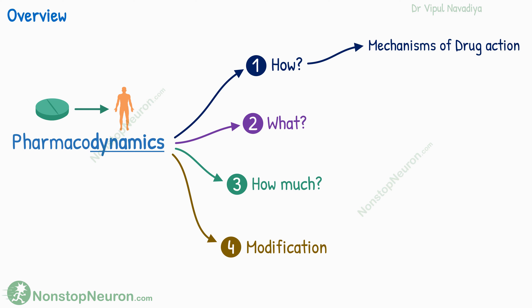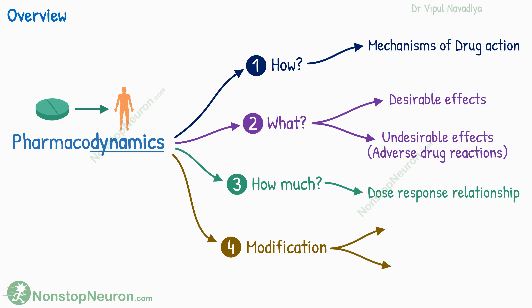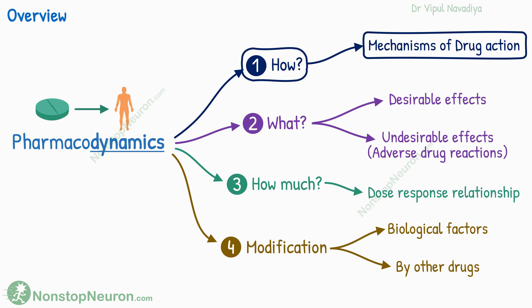As an answer to the first question, we will study different mechanisms of action of drugs. The effects are broadly categorized into desirable effects and undesirable effects, or adverse drug reactions. The quantitative aspect is studied under the dose-response relationship. Factors that modify drug actions are broadly biological factors and other drugs. In this lecture, we will talk about how the effects are produced — all the different types of mechanisms of action by which a drug can act on the body.